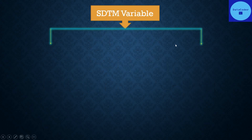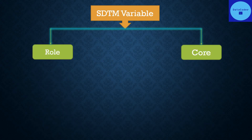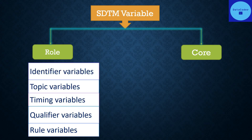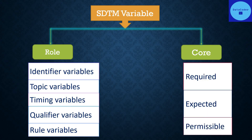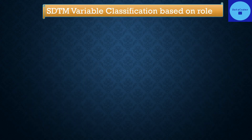SDTM variables are classified based on their role and based on the core. Based on role, the variables are classified as identifier, topic, timing, qualifier, and rule. Based on core, the variables are classified as required, expected, and permissible. Let's see each of them in detail.